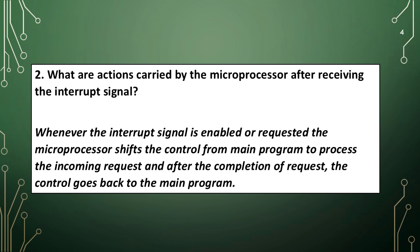What are actions carried out by the microprocessor after receiving the interrupt signal? Whenever the interrupt signal is enabled or requested, the microprocessor shifts control from the main program to process the incoming request. After completion of the request, control goes back to the main program.